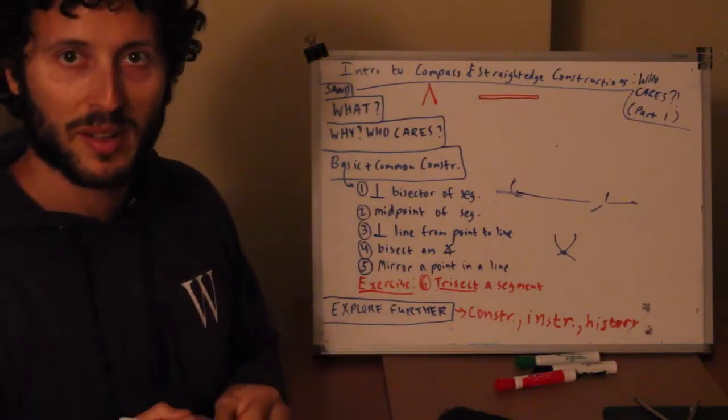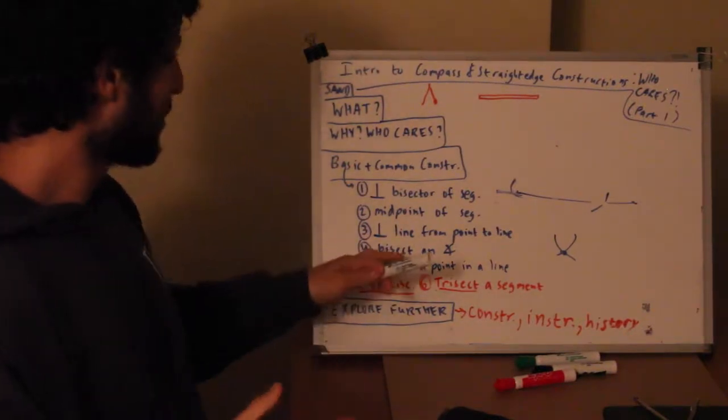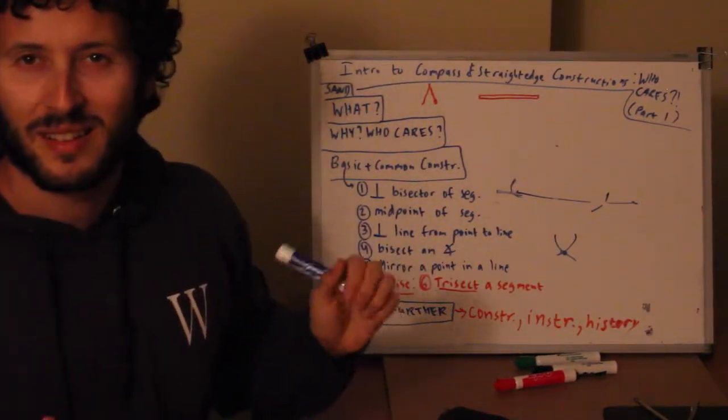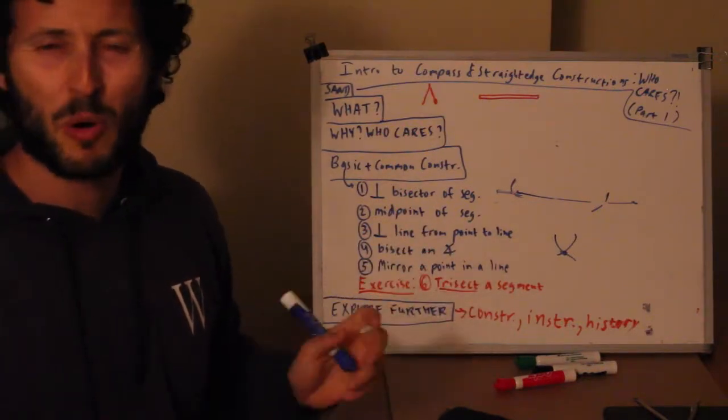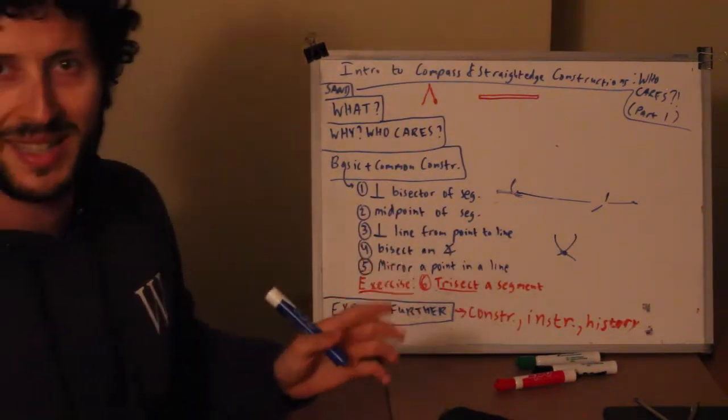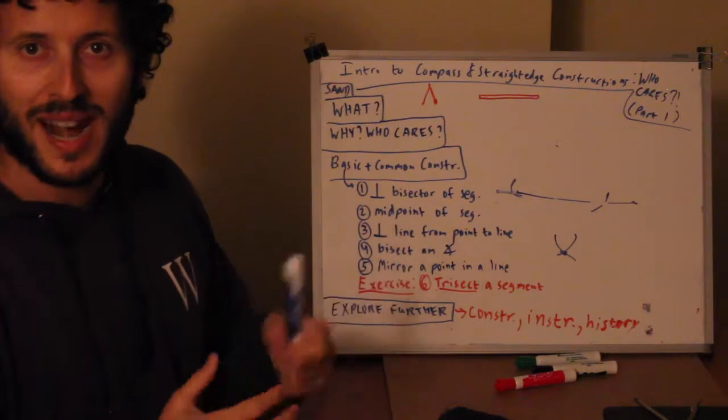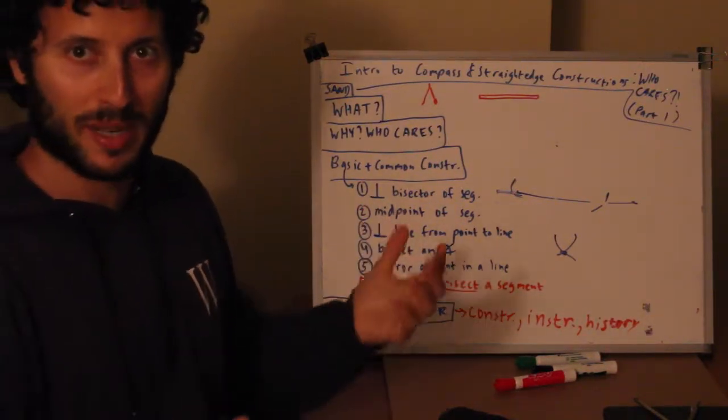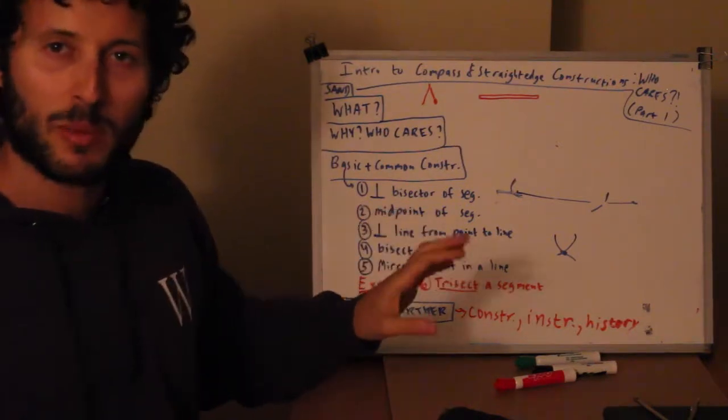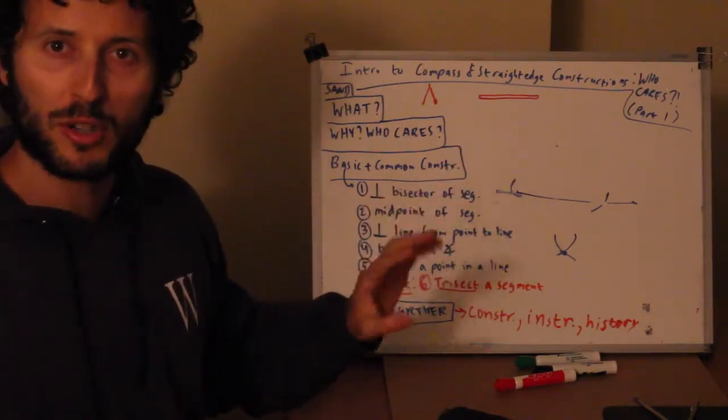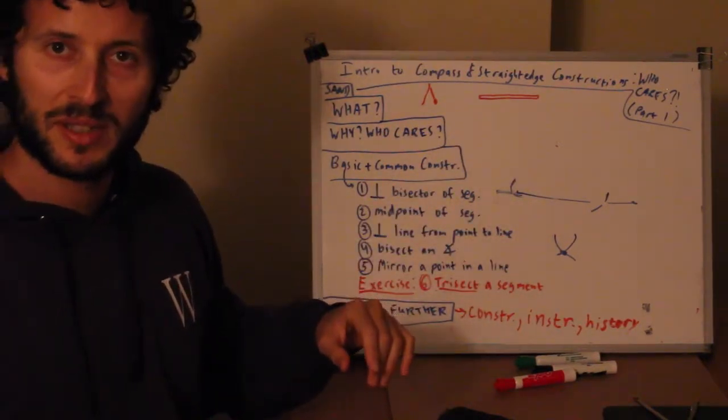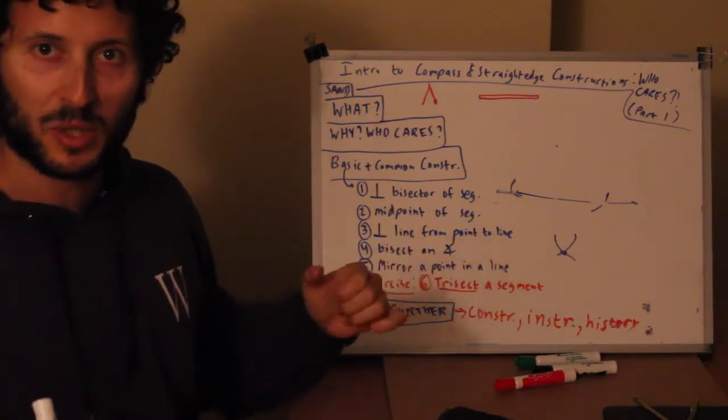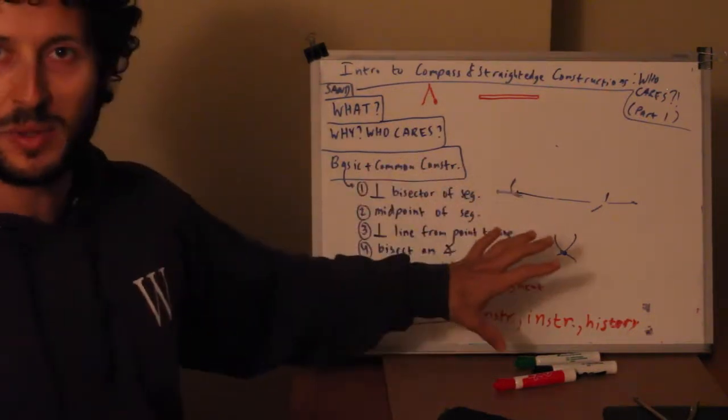So those are the five steps. These might have seemed kind of boring or easier or not very exciting, but these are some of the common low-level ingredients that we're gonna be using for more complex things. I probably will make another part or two to this later in the geometry series where we look at intermediate level constructions. For now I'll leave it with that.